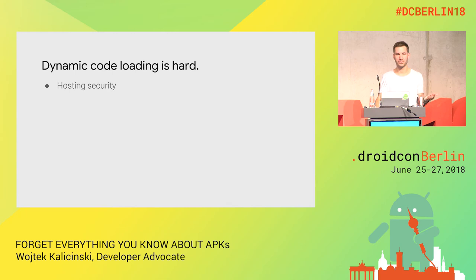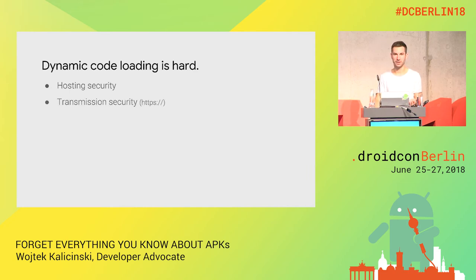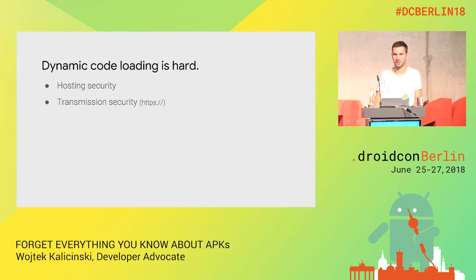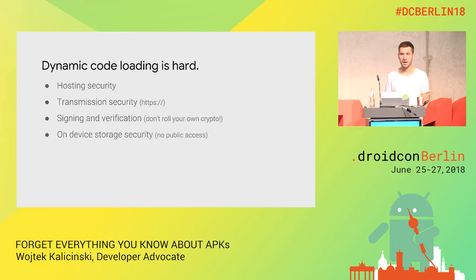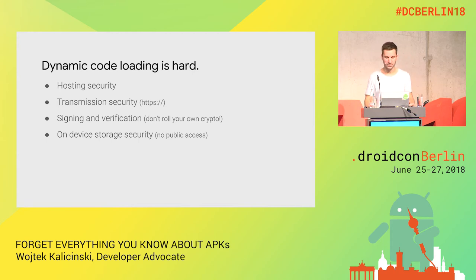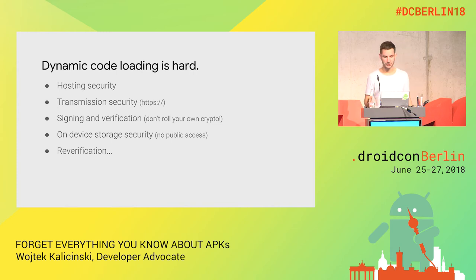The problem with implementing dynamic code loading is that you will at some point create a security issue. You had to host the code you want to load dynamically on your server, pull it down, make sure those files were secure, make sure you're downloading what you put on the server and not what someone is trying to send you — so you had to use HTTPS. Some apps downloaded over plain HTTP. Then you had to roll your own signing and verification. Don't roll your own crypto — it's too easy to make a mistake. Some apps even put code on the SD card, where anyone could replace it with their own DEX. There are just so many problems, but it's doable, and I'll show you later how we solved it.